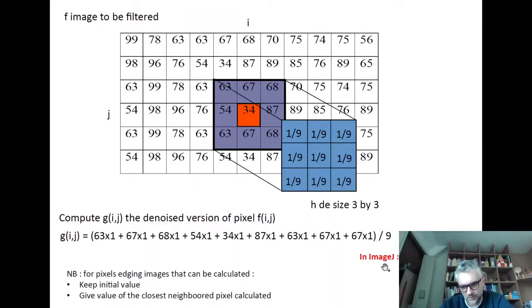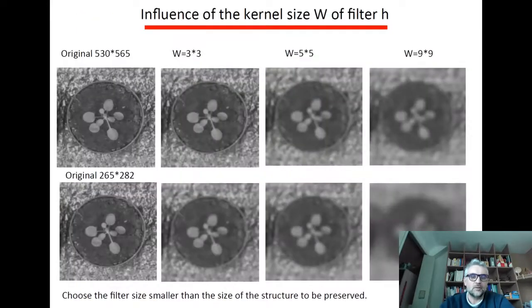In ImageJ it will be called process convolve and we will have the possibility to fix the value of the weights that we put in this image.